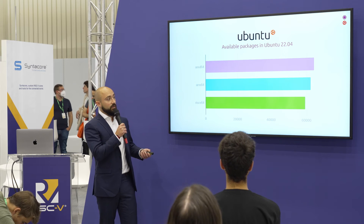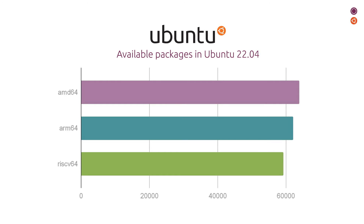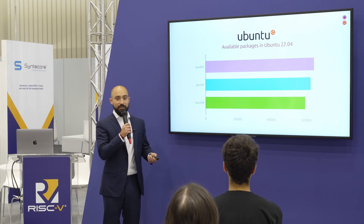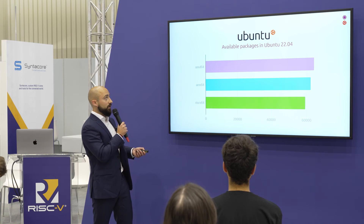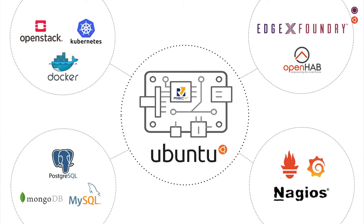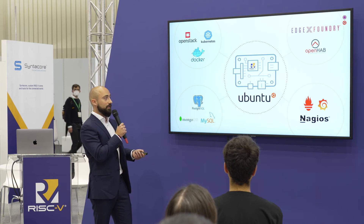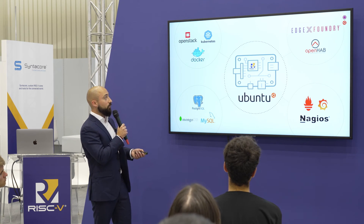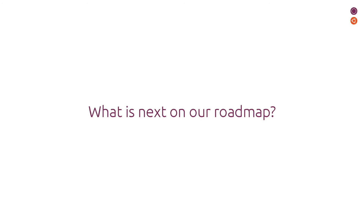It's really important that the parity of the open source software ecosystem on RISC-V reaches the same level as other architectures, because in the end that's how all the applications are enabled. By running Ubuntu on RISC-V you're able to tap into the broader open source ecosystem — ranging from server applications to IoT devices, databases, or any other type of open source application. Now let's talk about what is next on our roadmap, including some specific open source items we're working on.